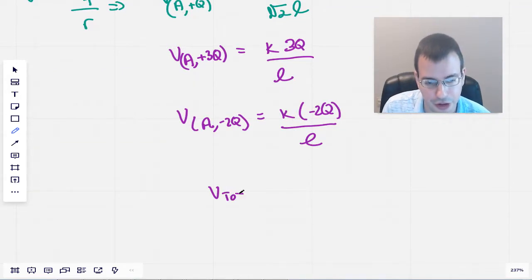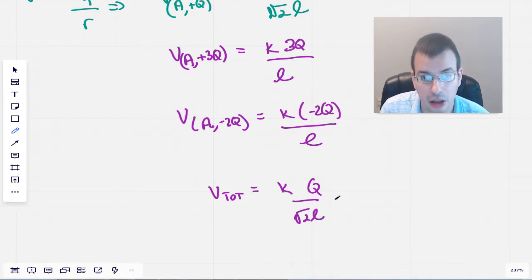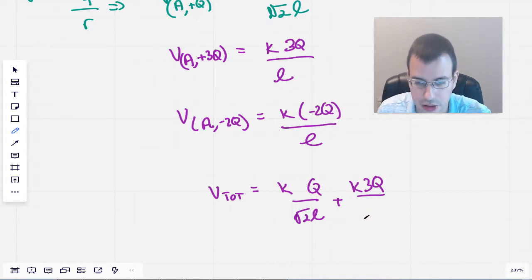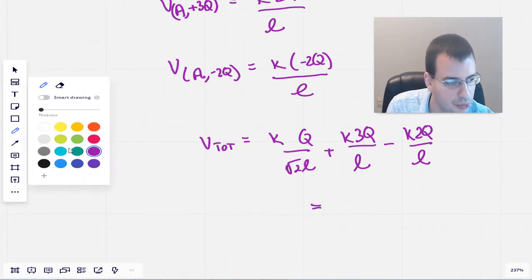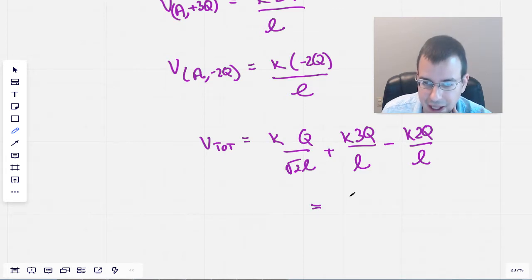So then total voltage. There's no arrow up there because it's, again, scalar, not a vector. K Q over square root of 2L plus K 3Q over L minus K 2Q over L. Simplifying, we have K Q over L times 1 over square root of 2. 3 minus 2 is plus 1.